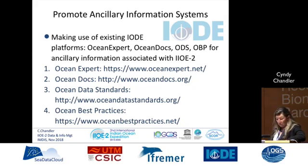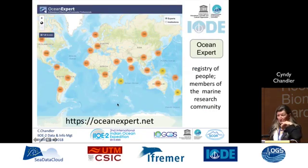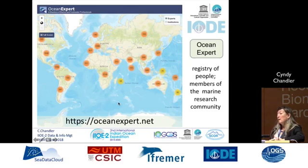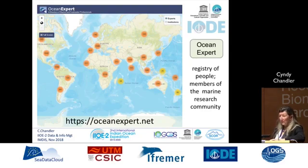In particular, it's Ocean Expert, Ocean Docs, Ocean Data Standards, and Ocean Best Practices — I've got a slide or two on each of those. Ocean Expert is a registry of people, but it also has their ORCID or researcher IDs, their skill set, and their contact information — an extremely useful database. IIOE2 can harvest information from that, so they don't have to enter that information and build it from scratch, which saves a lot of time and effort — key because there's no funding for this.